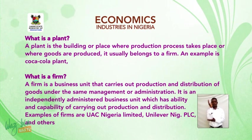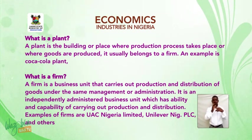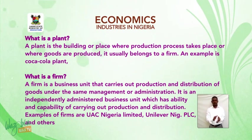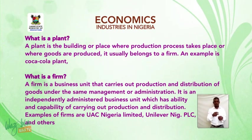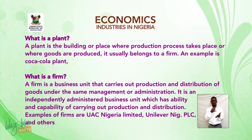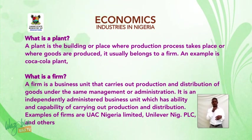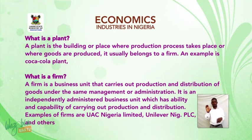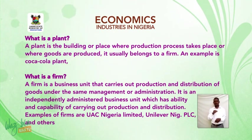What is a plant? A plant is a building or place where the production process takes place or where goods are produced. It usually belongs to a firm, and an example is a Coca-Cola plant.